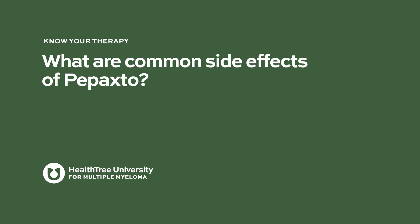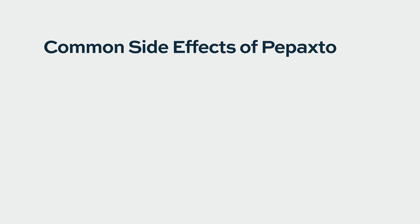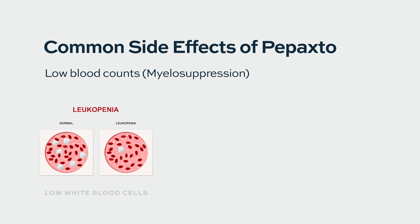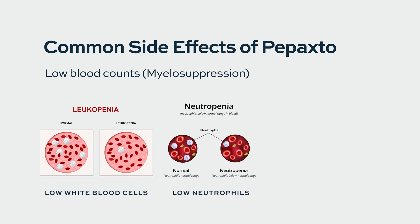What are common side effects of Pepaxto? The relative targeting by virtue of higher aminopeptidase levels in myeloma cells plays a role in its more favorable side effect profile. However, there are clearly aminopeptidases present in bone marrow precursor cells, because one of the most common side effects of melphalanflufenamide is low blood counts. Low white blood cell count, and in particular low neutrophil count, is quite common and can be quite severe, requiring very careful monitoring for any patient on this therapy.